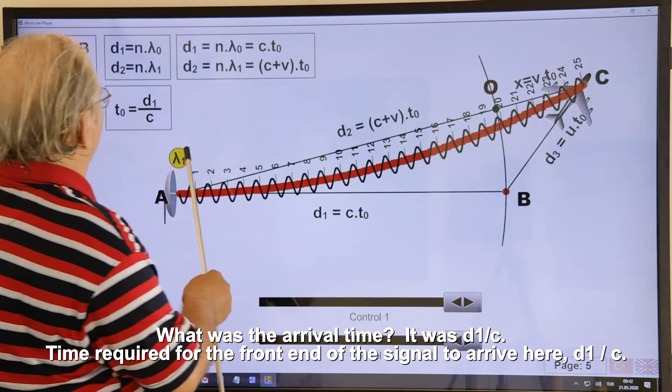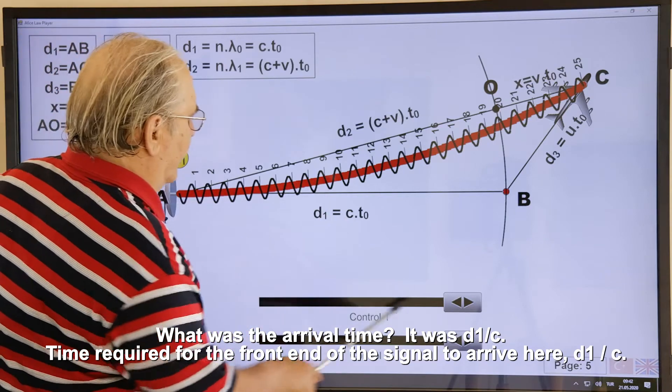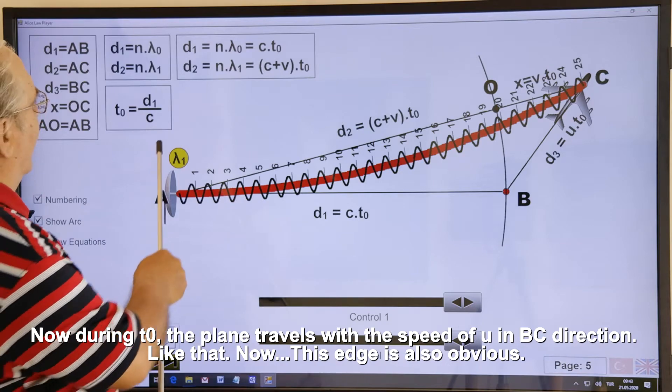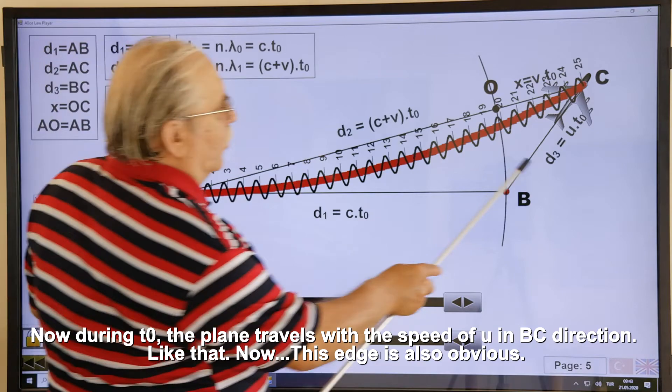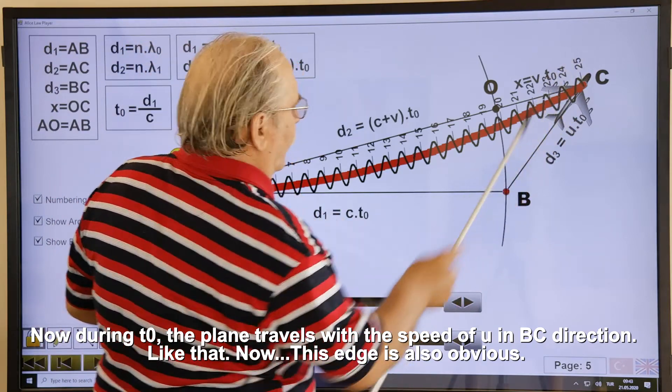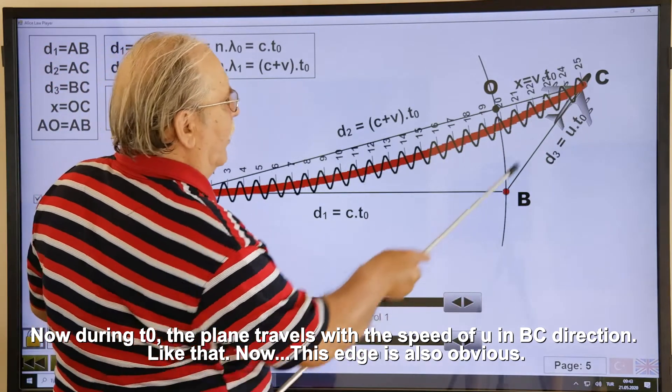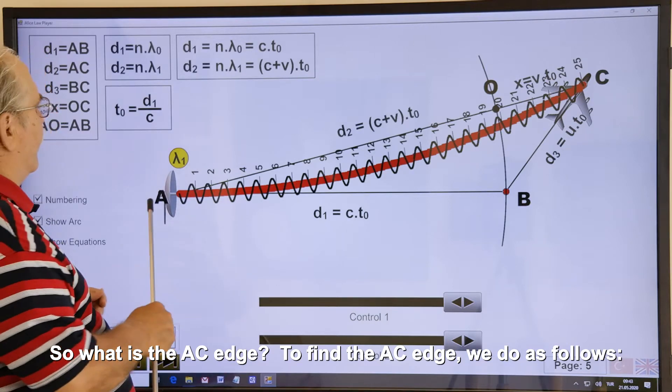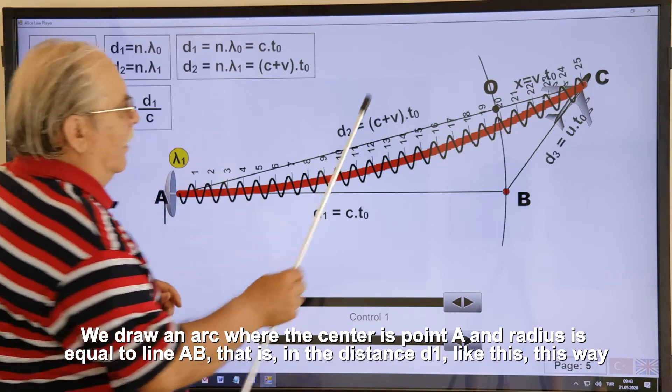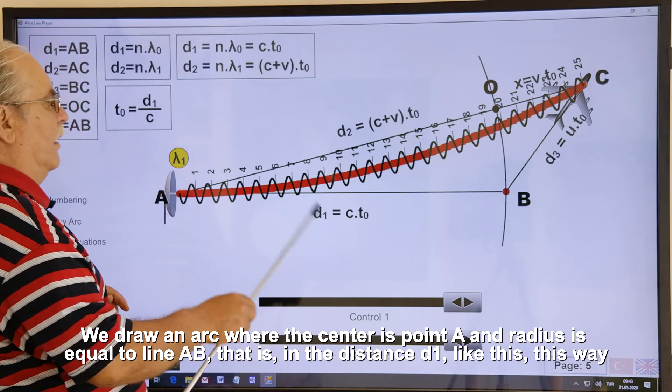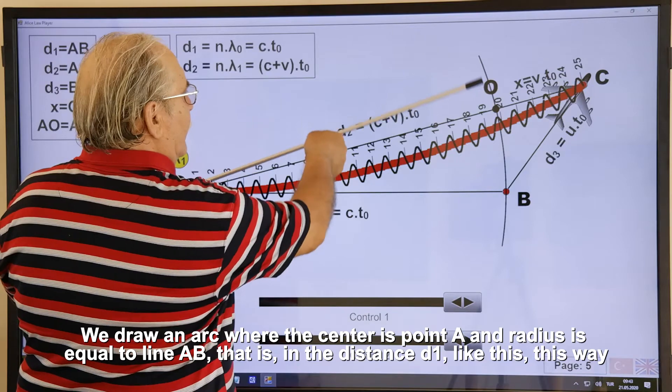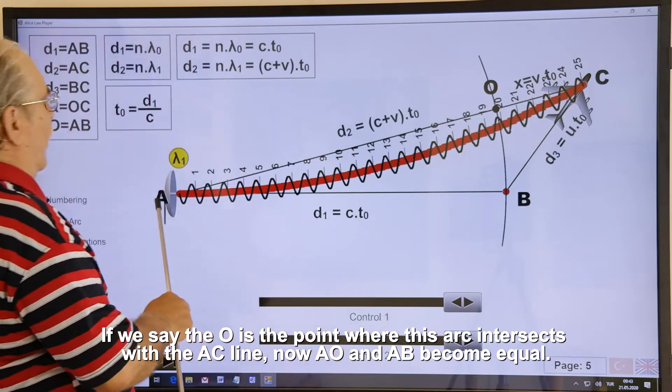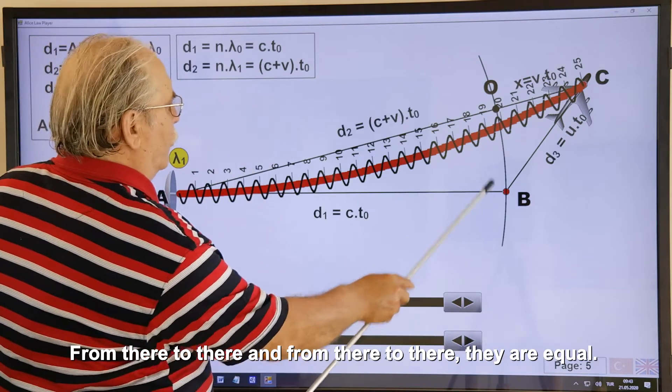Because it is a triangle whose edges, all three edges, are determined by the arrival time of the signal. What was the arrival time? It was D1 divided by C. Time required for the front end of the signal to arrive here. D1 divided by C. Now, during T0 the plane travels with the speed of U in BC direction. Like that. Now, this edge is also obvious. So what is the AC edge? To find the AC edge, we do as follows. We draw an arc, where the center is point A and radius is equal to line AB, that is, in the distance D1. Like this. This way. If we say the O is the point, where this arc intersects with the AC line, now AO and AB become equal. From there to there, and from there to there, they are equal.